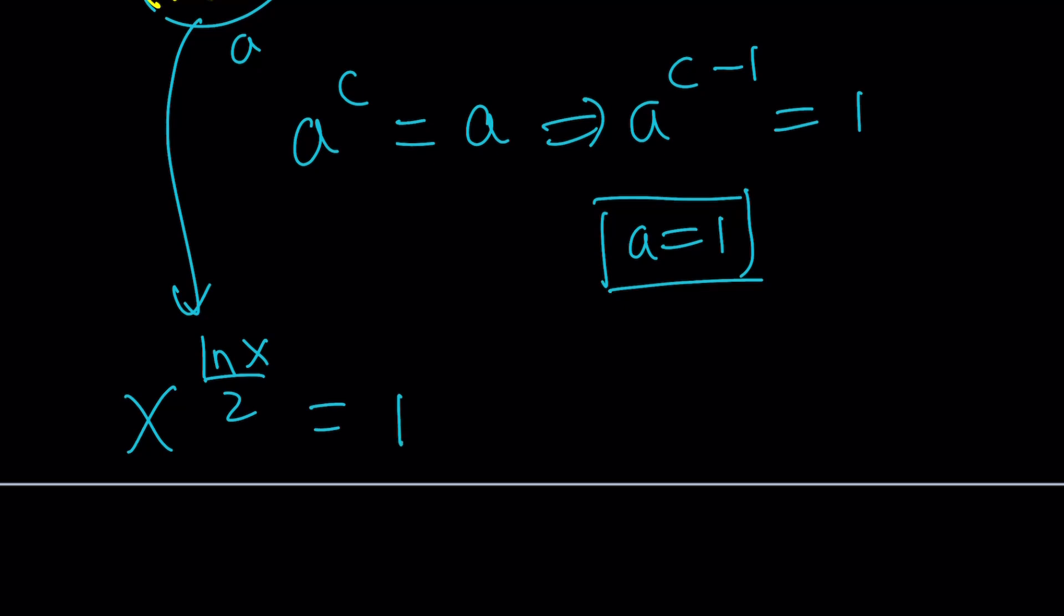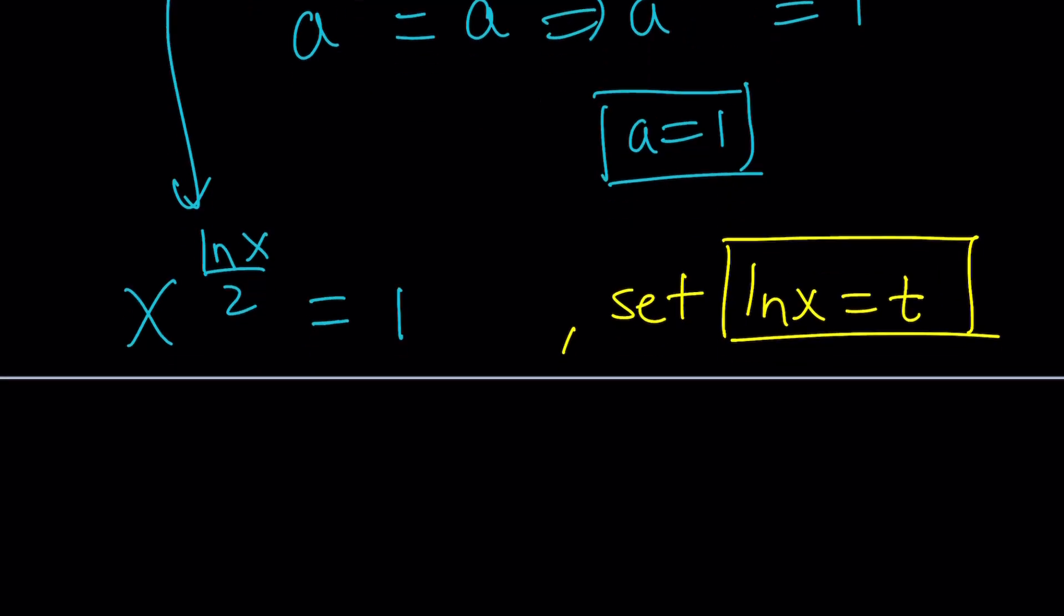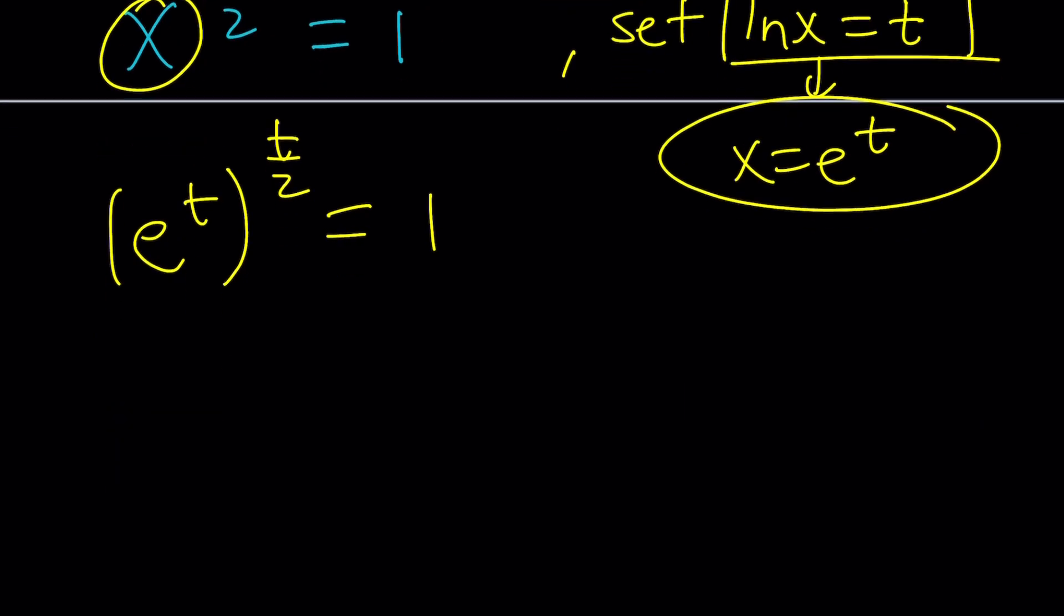How do you do that? Let's go ahead and set ln x equal to t. Substitution is awesome. It's going to help us here. If you set it, then x is going to be e to the power t, the exponential function, right? So let's go ahead and replace x with that, and ln x with t. So it's going to be like this. Don't worry, I'm going to replace the one in a little bit. And this is going to become e to the power t squared over 2 equals 1.